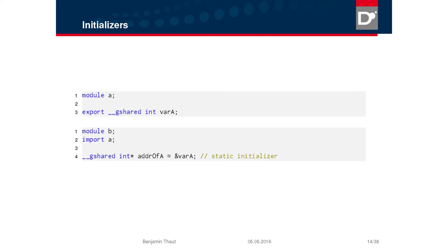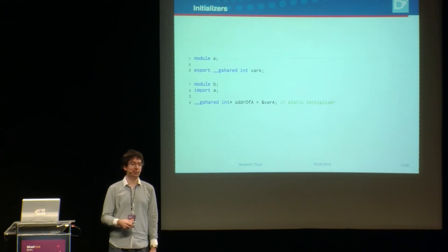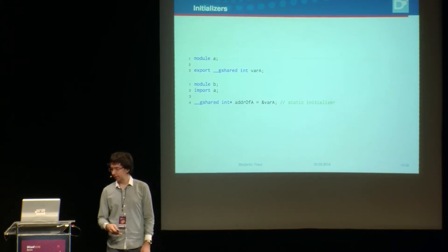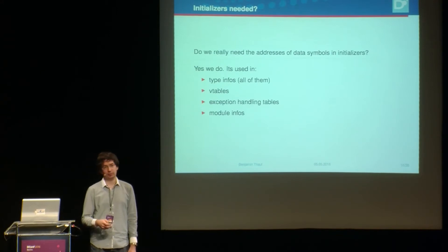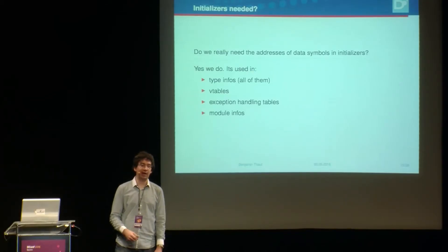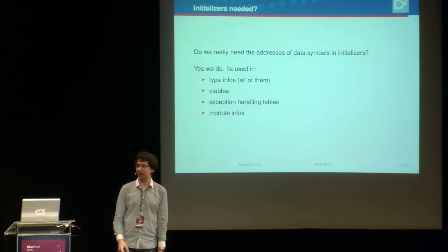Then someone comes along and takes the address of a variable and uses it in an initializer. That works fine in a fully statically linked build because the linker can fill in the address. But with a dynamically linked library, the address isn't known at link time — it's resolved by the OS loader — so you have to resolve it at runtime. You might think you can just disallow this, but you can't, because it's used all over the place in D: type infos, vtables, exception handling tables, and module info all have references to data symbols across DLL boundaries.